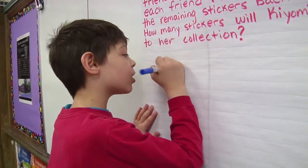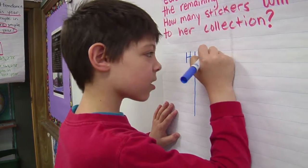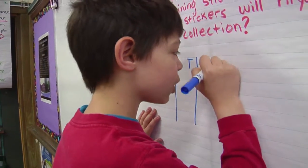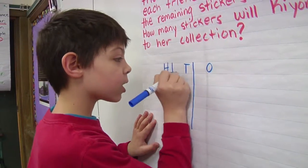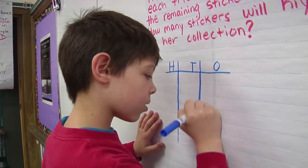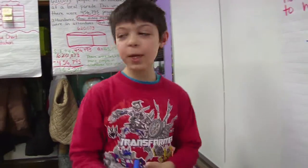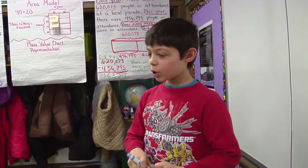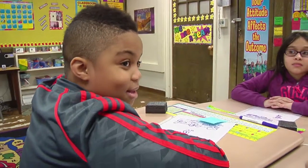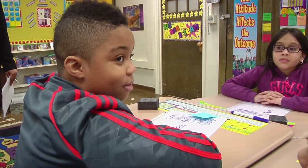So, hundreds. So, how many tens — so what's the whole here, scholars? Rayshawn: the dividend, or the whole in this problem, is 57.